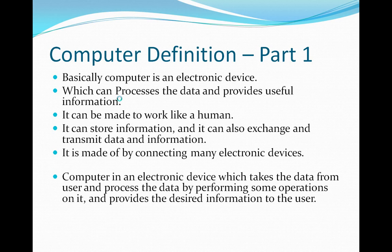So if computer is an electronic device which can process data and provides useful information, it can act like a human, it can store information, it can exchange the data and information. If you look at the computer definition, it is made by connecting many electronic devices. And overall, it is an electronic device which takes the data from user and processes the data, performing some operations on it and provides the desired information to the user.